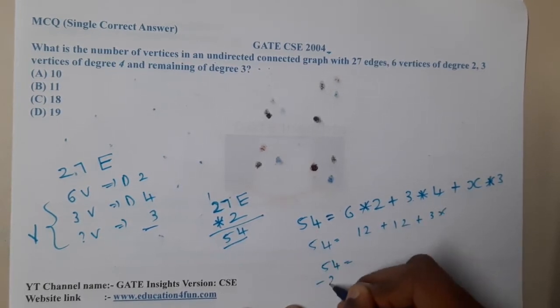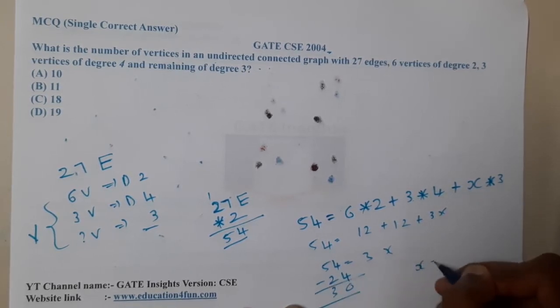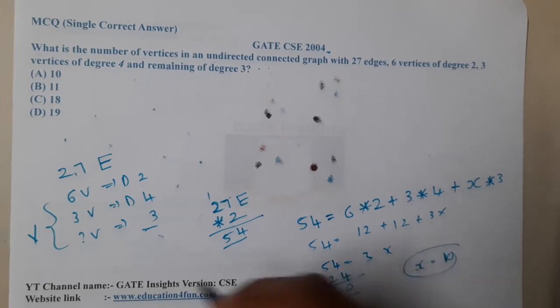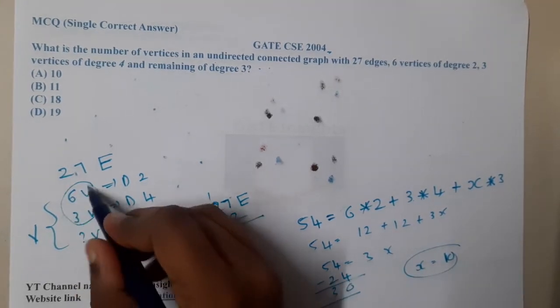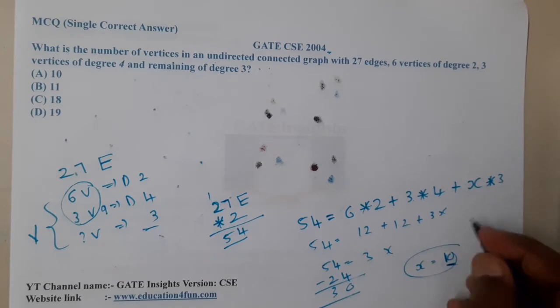So x equals 10. What is this count? These are 9, right? And we got x value as 10, so a total of 19 vertices are there. So D is the correct answer.